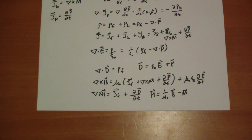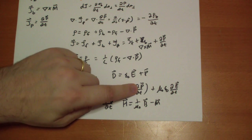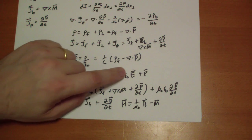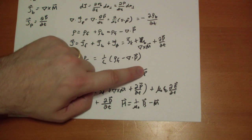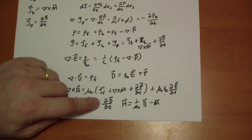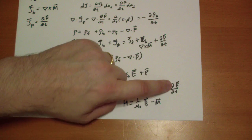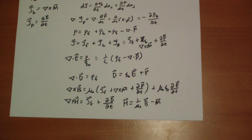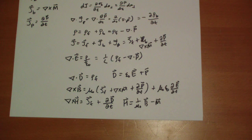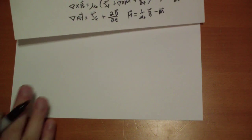Pointing this out again: D-vector is epsilon-naught E-vector plus P-vector. So here's dP/dt — that's part of dD/dt — and here's epsilon times dE/dt. Faraday's law doesn't change, and the divergence of B is zero. Finally, we can rewrite all of Maxwell's equations for material.